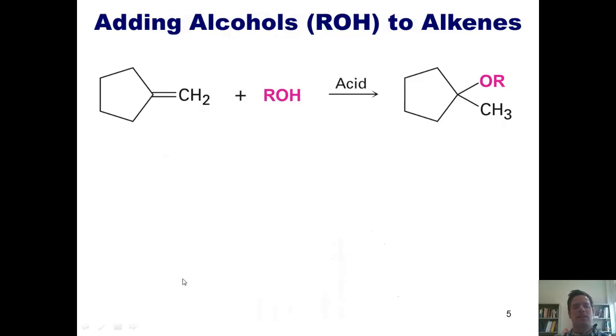This brings us to our next reaction, adding alcohols or ROH to alkenes. This particular reaction, remember that R represents any carbon-hydrogen chain. Very similar to adding water and catalytic acid, this places the OR group on the more substituted carbon that was originally present in the double bond.